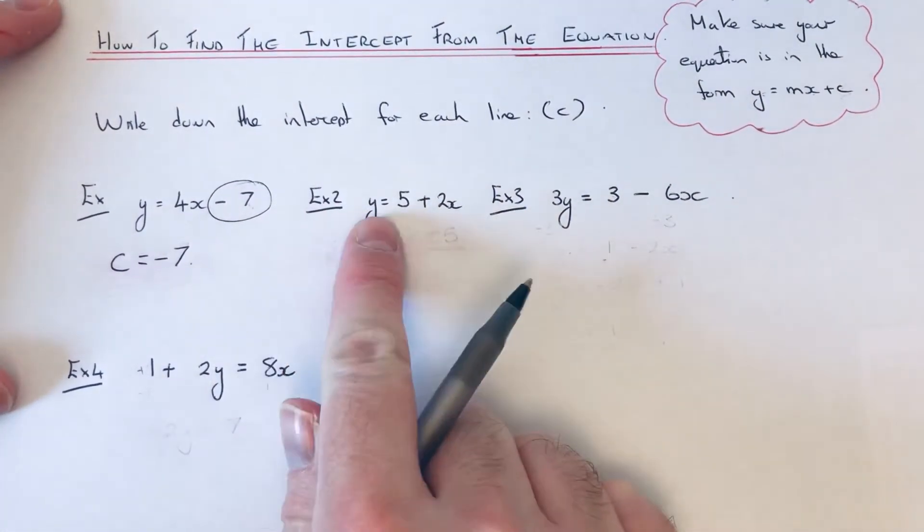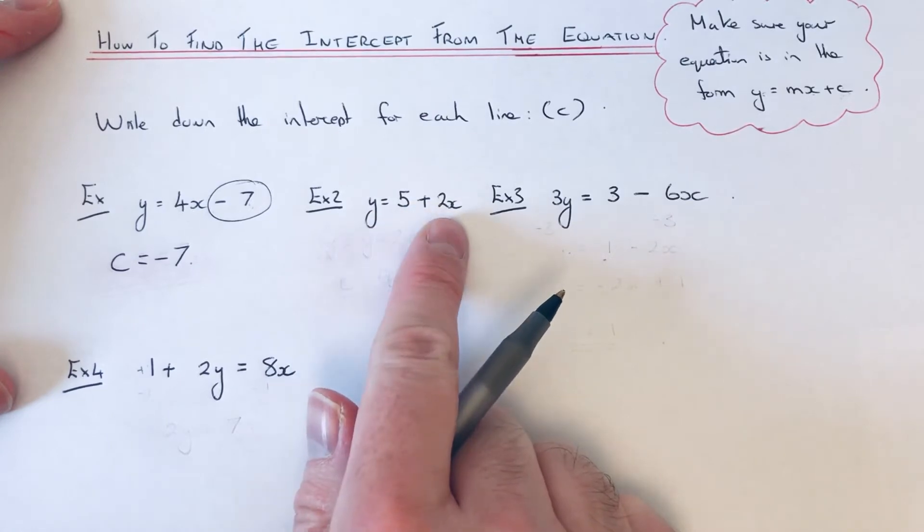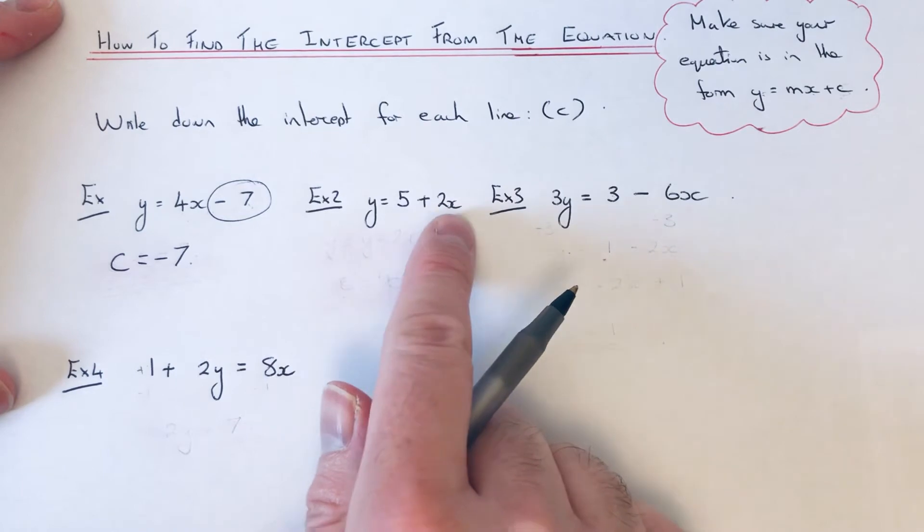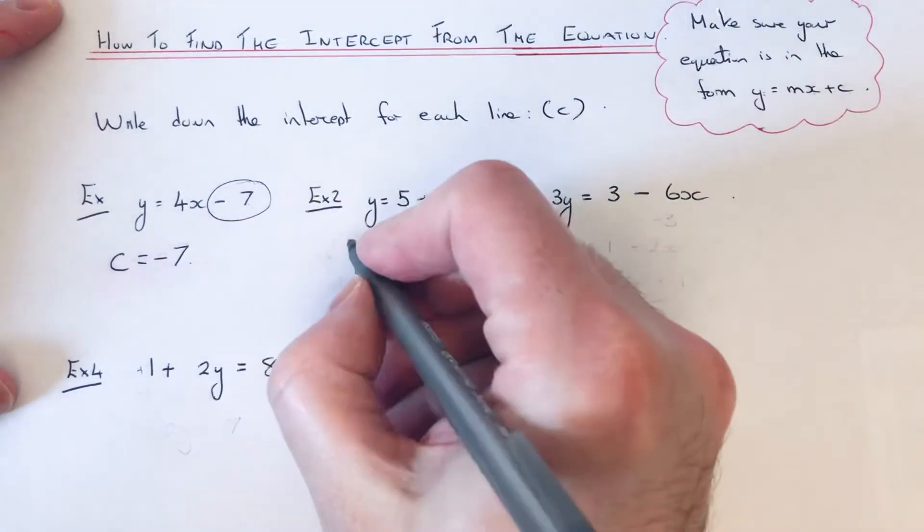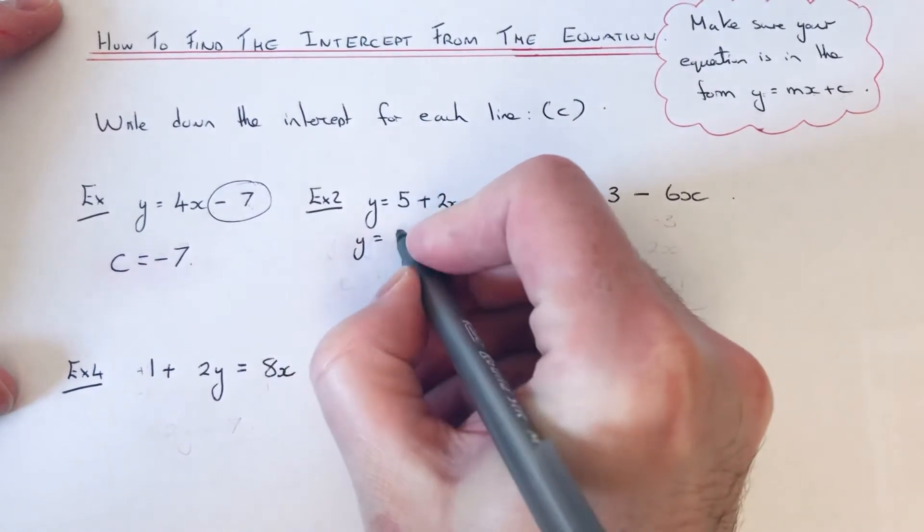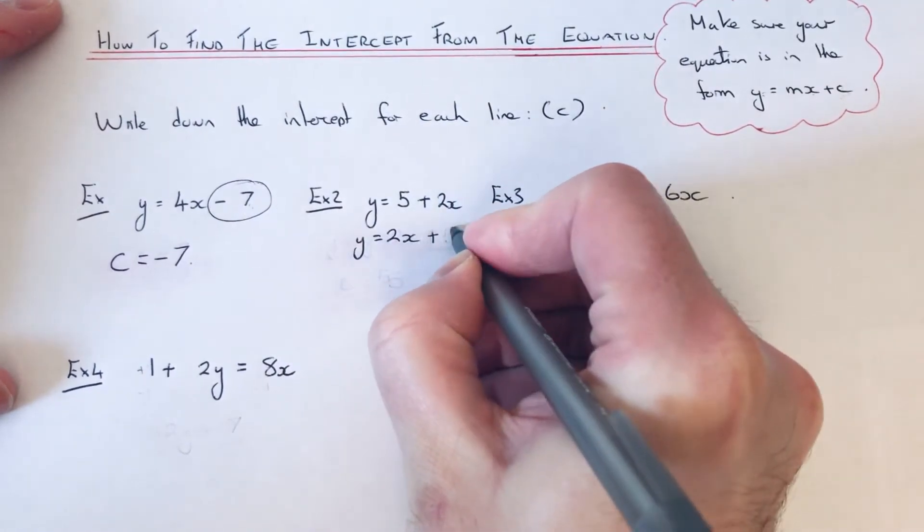Let's have a look at example 2. This time we have y equals 5 plus 2x. If you notice, this one is in a slightly different order. So we can actually rewrite that as y equals 2x plus 5.